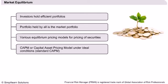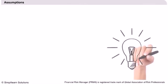The standard form of the Capital Asset Pricing Model, CAPM, is based on the most idealistic conditions. Let us now see those underlying assumptions. The first assumption means that there is no transaction cost or any cost of purchasing or selling the security.